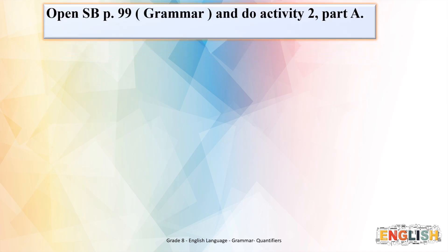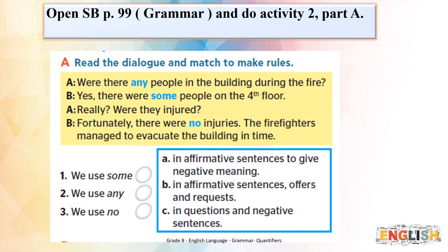Now open your student book, page 99, Grammar, activity 2, Part A. Read the dialogue and match to make rules. 'Were there any people in the building during the fire?' — this is a question, and the focus is on 'any,' so we use 'any' in questions and negative sentences. 'Yes, there were some people on the fourth floor' — this is an affirmative sentence, and the focus is on 'some,' so we use 'some' in affirmative sentences, offers, and requests. 'Fortunately, there were no injuries' — this is an affirmative sentence but the meaning is negative, so the focus is on 'no.' We use 'no' in affirmative sentences to give a negative meaning.